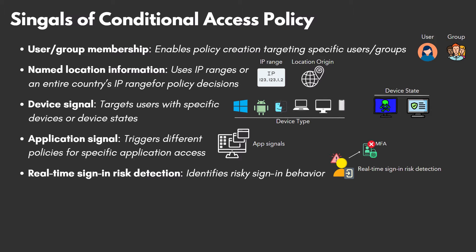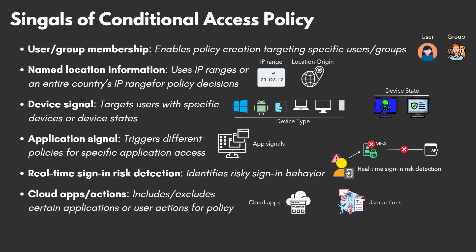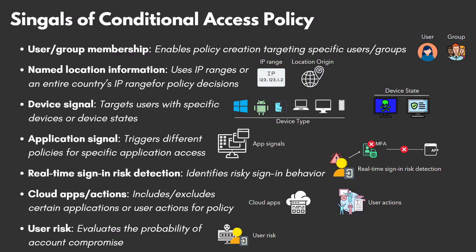If a user fails to take one of these actions, the user can be blocked from access until an admin investigates and takes action. Using the cloud apps or actions signal, an admin can include or exclude certain cloud applications or user actions that will be subjected to a policy. User risk is available to customers with access to the identity protection feature in Microsoft IntraID. User risk refers to the probability that a particular account is compromised, and it can be evaluated as part of a Conditional Access Policy.